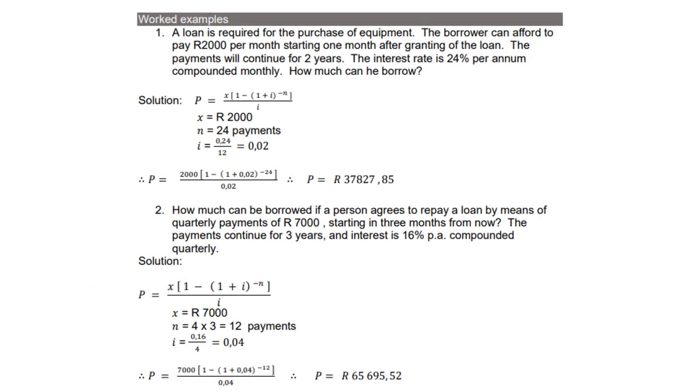So let's look at an example. A loan is required for the purchase of equipment. The borrower can afford to pay 2,000 per month starting one month after granting of the loan. The payments will be continued for two years. The interest rate is 24% per annum, compounded monthly. How much can we borrow?